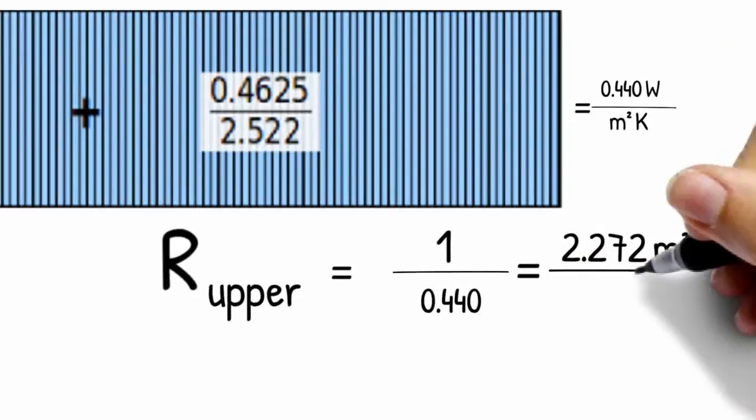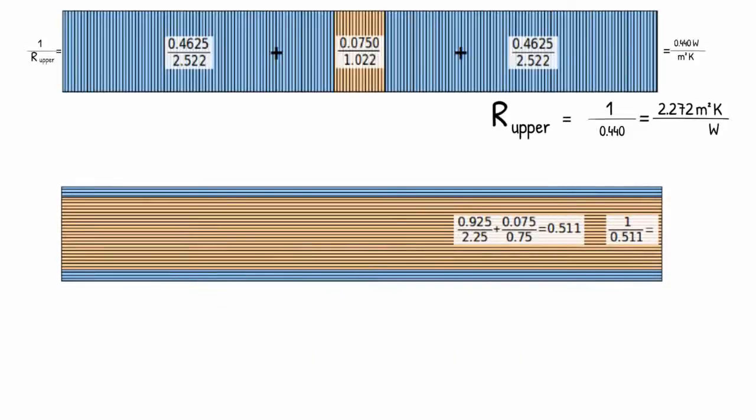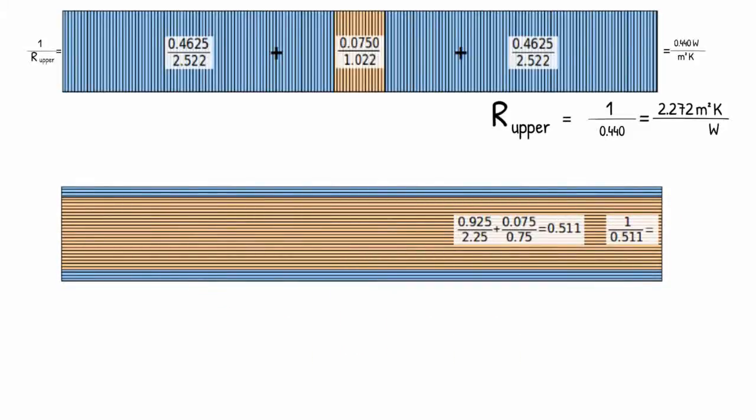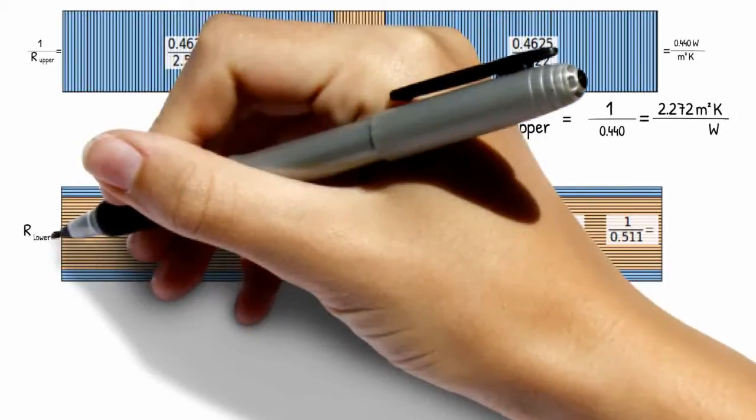The next step is to establish the lower margin of this resistance range. To do this we take the resistance of the layers but we homogenize the inhomogeneous layer first by putting the percentage of the areas over the resistance and then use the inverse.